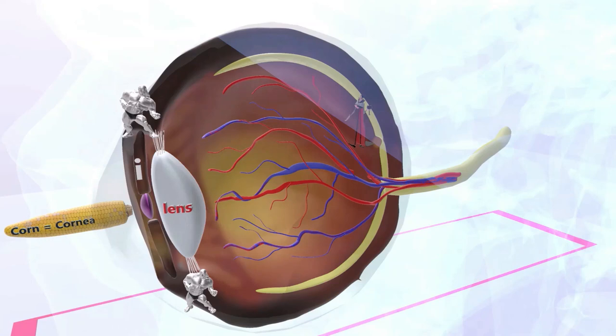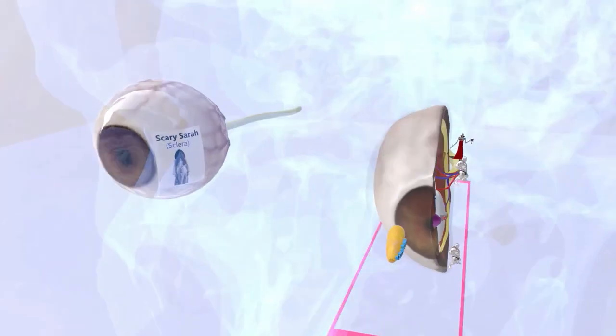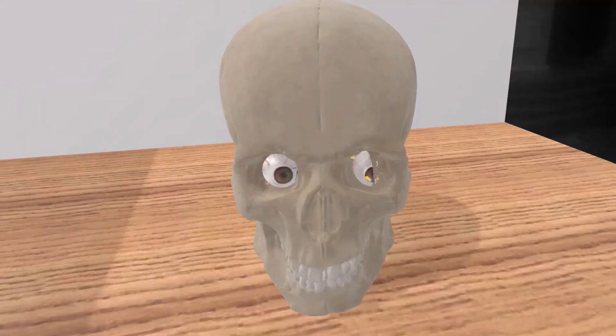These are basically all the important structures that we need to know about the eye. Again, don't forget about scary Sarah for sclera. All right, I hope you enjoyed this scene. Take care.